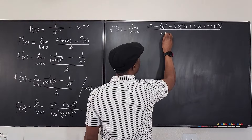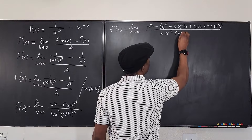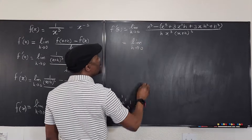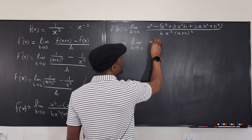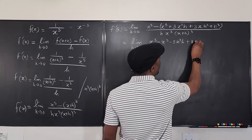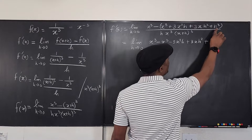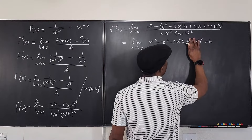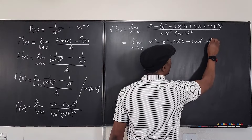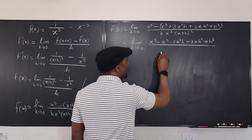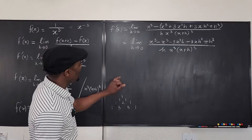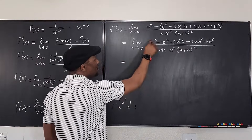So we have the limit as h goes to 0 of: x cubed minus (x³ + 3x²h + 3xh² + h³), all divided by h·x³·(x+h)³. When we remove the negative sign, everything inside becomes negative: x³ minus x³ minus 3x²h minus 3xh² minus h³, divided by h·x³·(x+h)³.